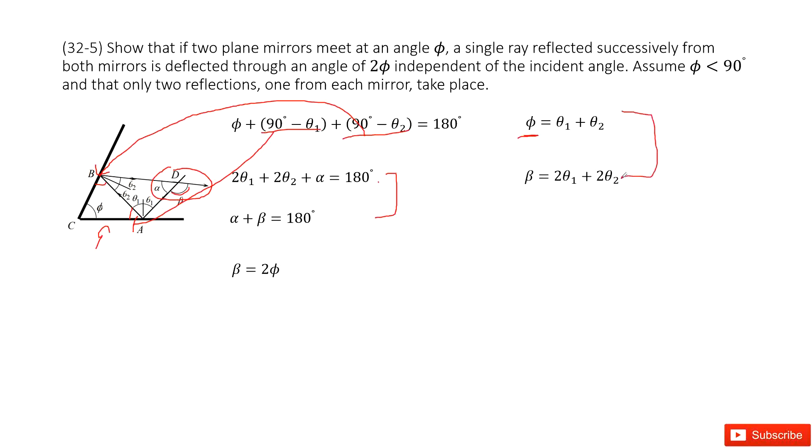Now looking at these two equations, beta just equals 2 times phi. Thank you.